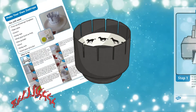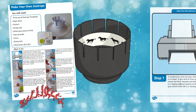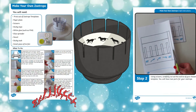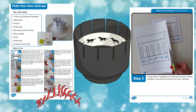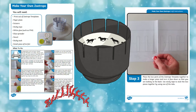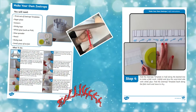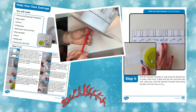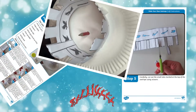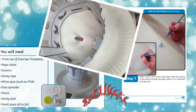For a fun engaging activity, teach children about animation with these superb zoetrope instructions. Zoetropes were very popular in Victorian times as a way of showing a moving image. They were the stop frame animations of the past. This is a perfect activity to discover with your class before introducing animation and filmmaking.